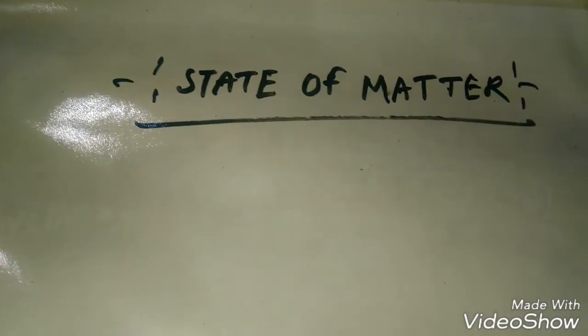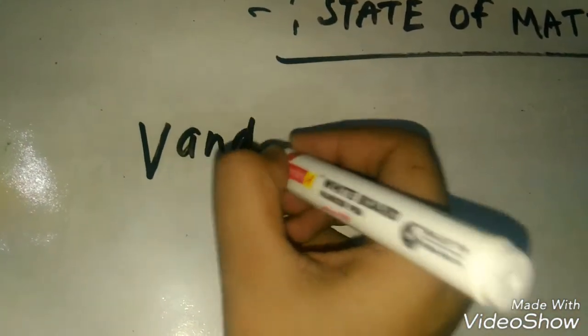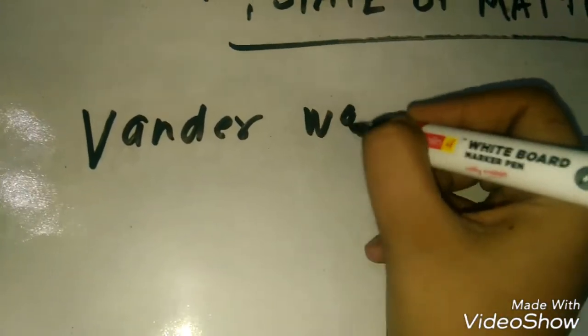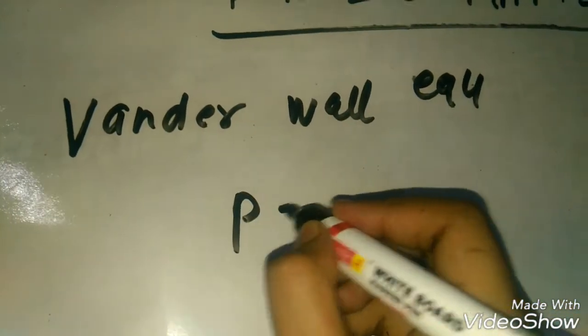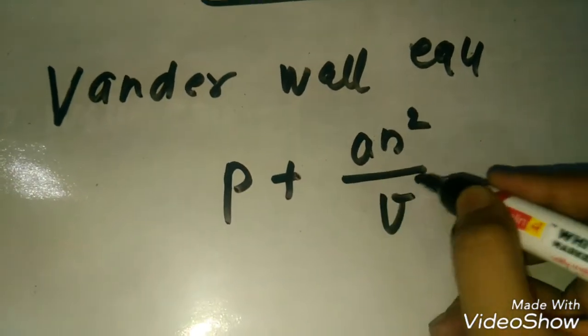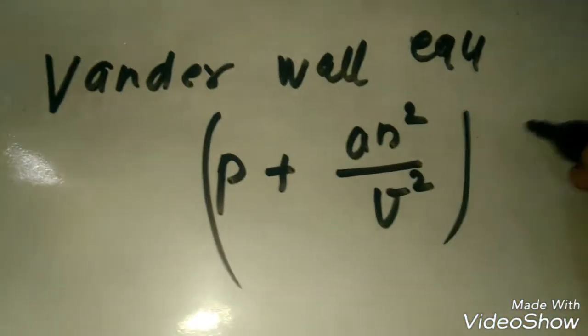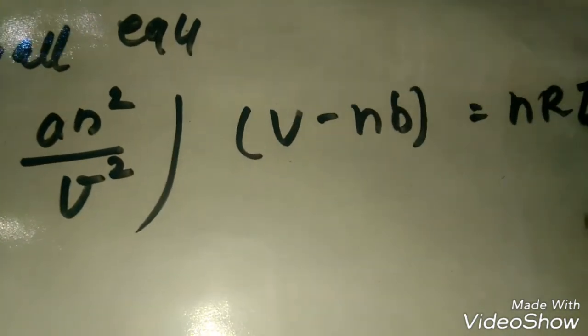I will talk about the formulas for revision. First, let's see what is the Van der Waals equation. Van der Waals equation: P plus a n square upon V square, V minus nb, is equals to nRT.